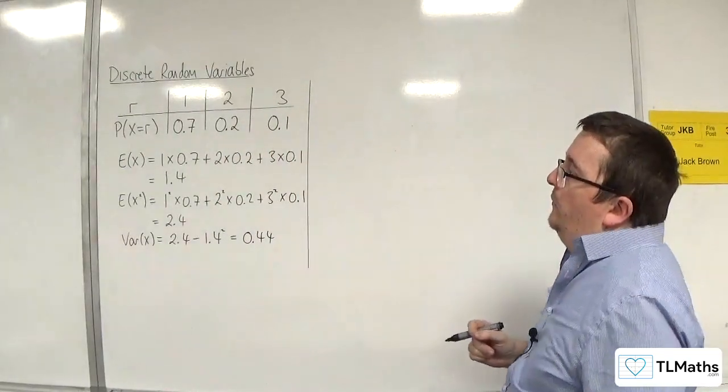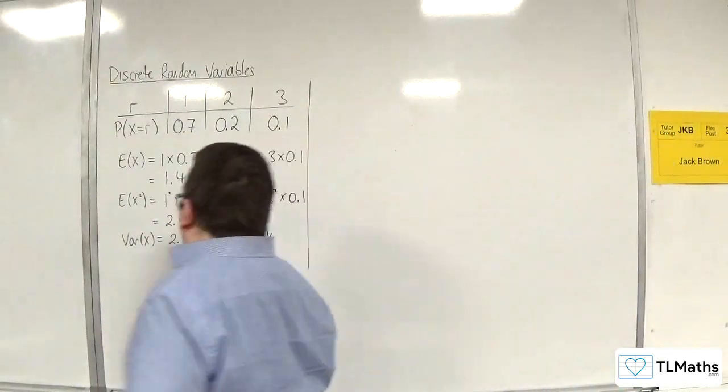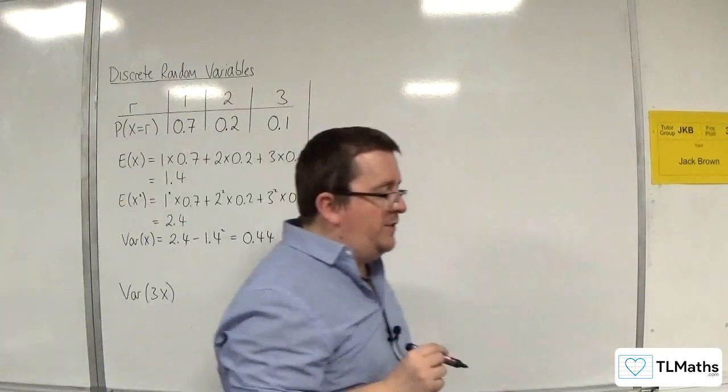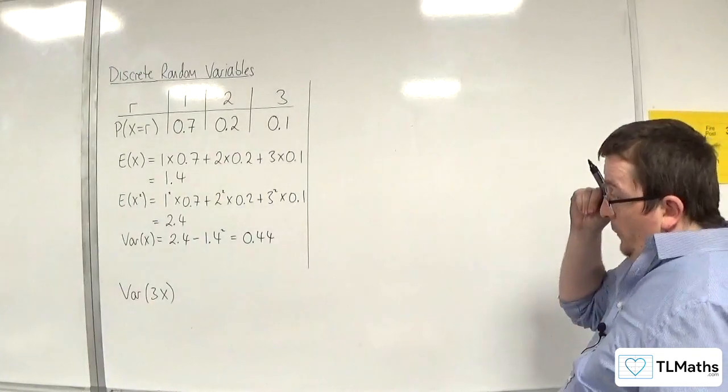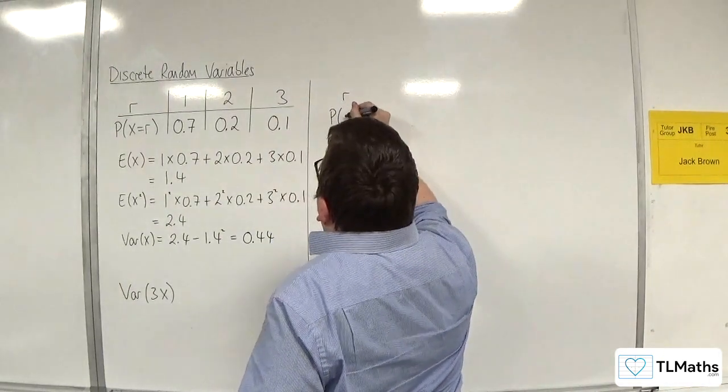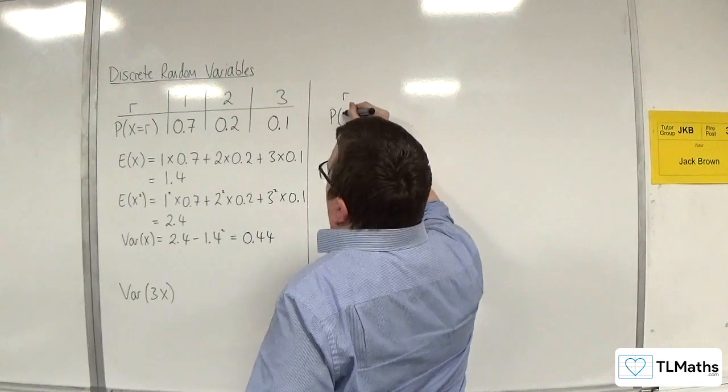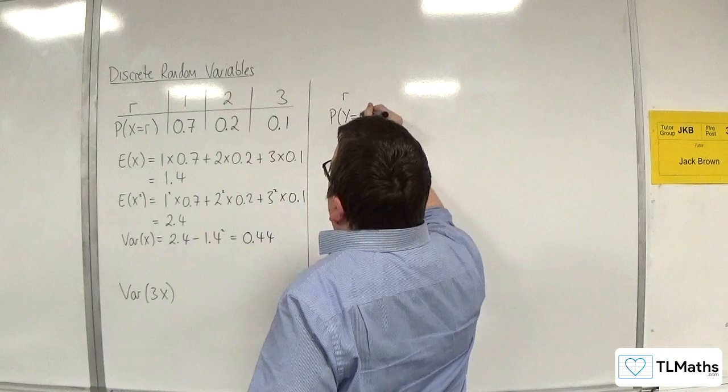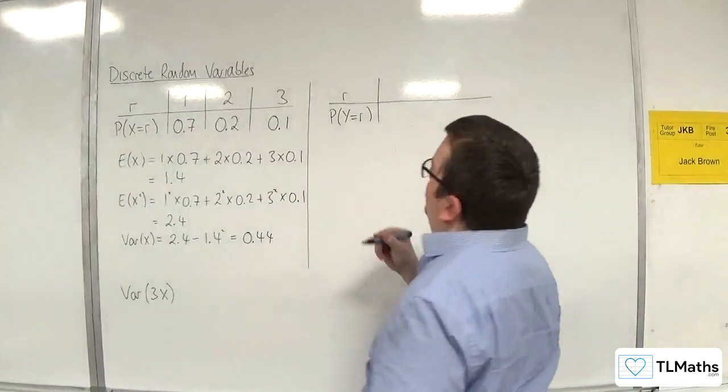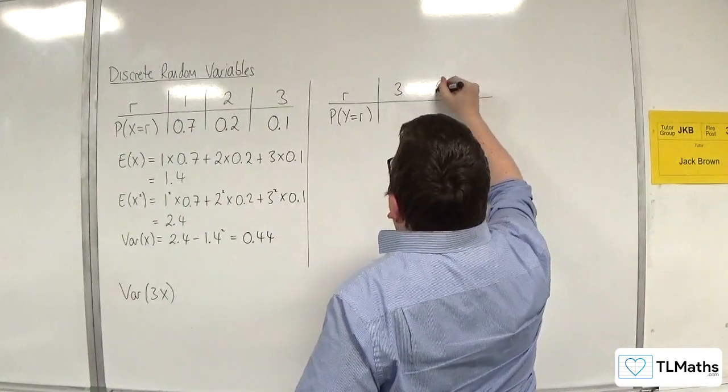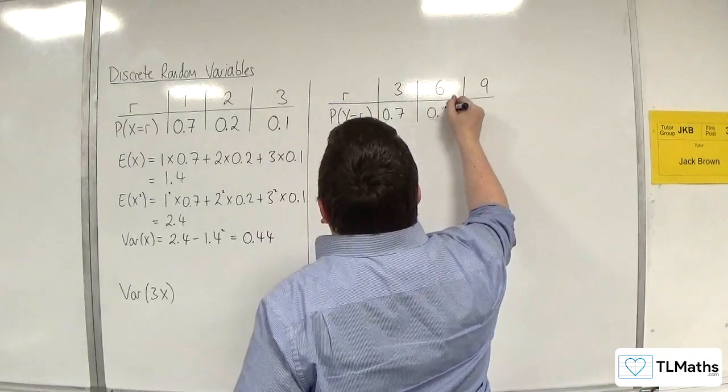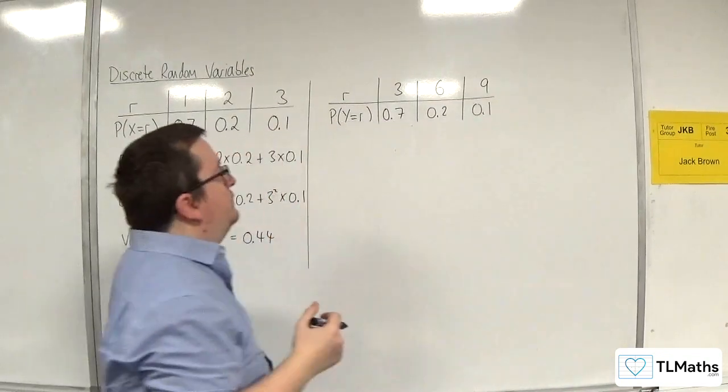Now what I'm interested in is looking at var of 3x. I'm going to investigate what that would be. So our distribution would now look like this. Let's go with y equals r. So y here is 3x. We're going to have 3, 6, 9 with probabilities 0.7, 0.2, 0.1.